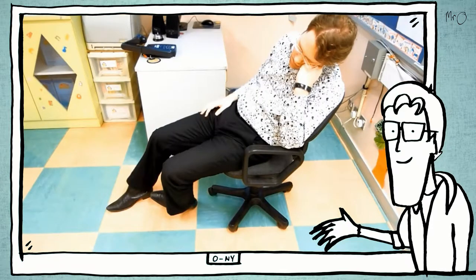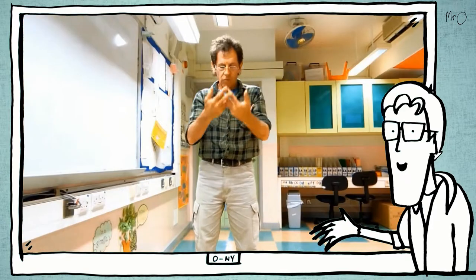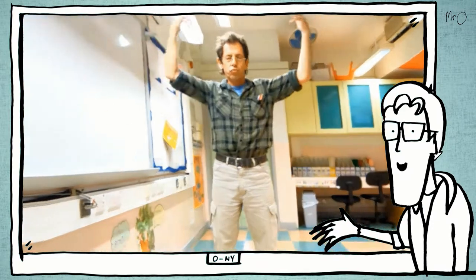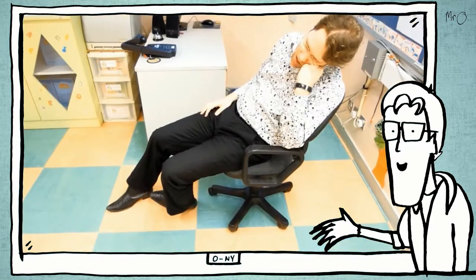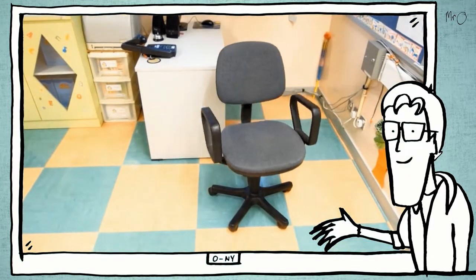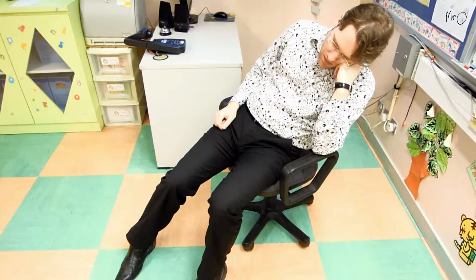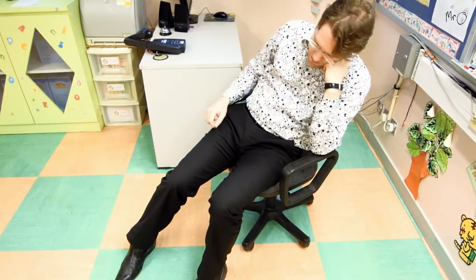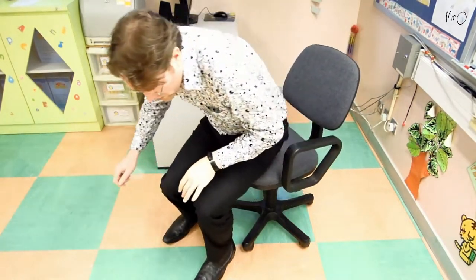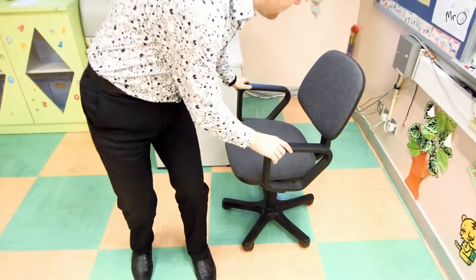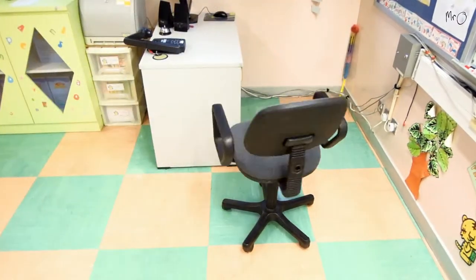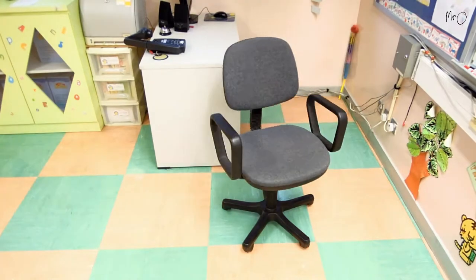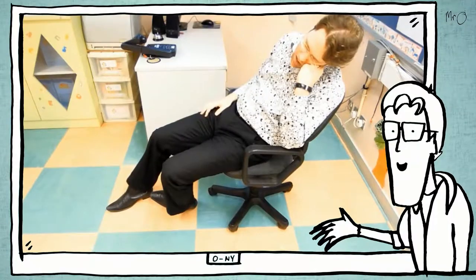Number 1. The first special effect I ever tried was this one in the first Tuck Shop video. This is very simple. I just stood up and moved the chair. Afterwards I cut the middle part out and added a sound. This is an example of cutting.